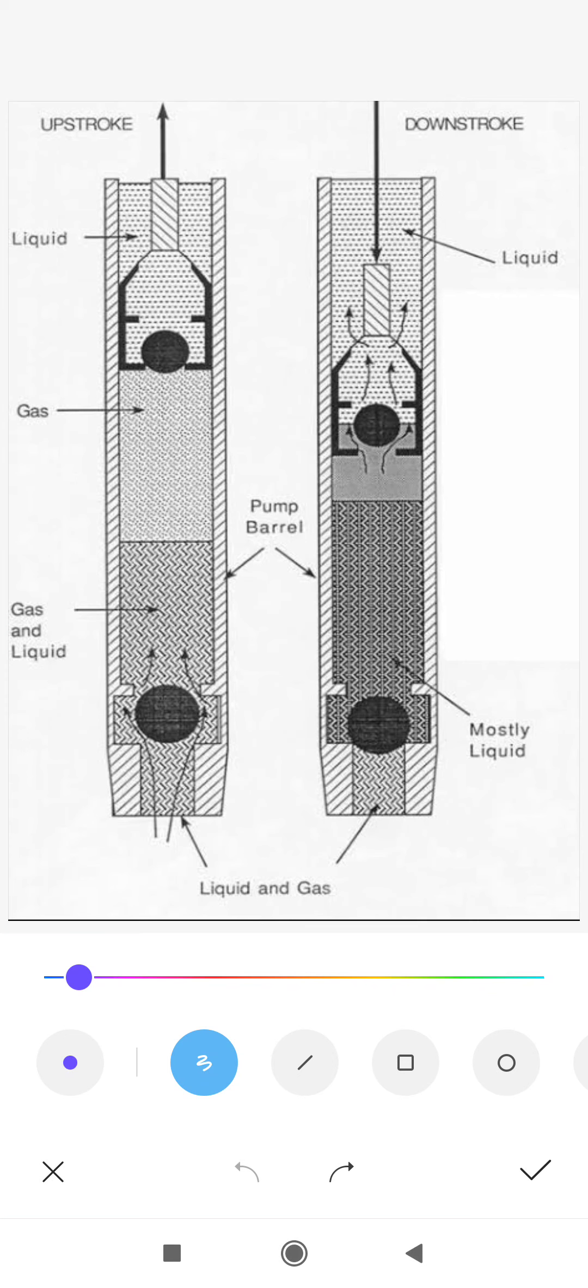The entire pump structure is held down with the tubing with the help of the holding down system. We can have two types of holding down systems: the top hold down system and the bottom holding down system. This holding down system will anchor the tubing pump with the tubing.